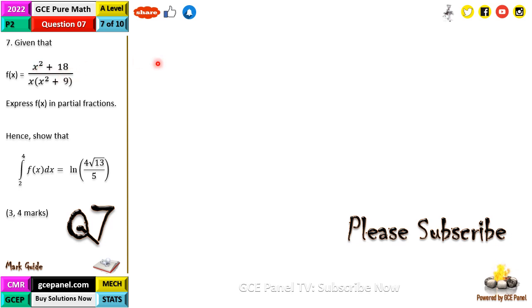Expressing this in partial fractions, we have x squared plus 18 all that on x times x squared plus 9. This is going to be in the form A over x plus, and now this other factor here is Bx plus C, so we're going to have Bx plus C all this on x squared plus 9.